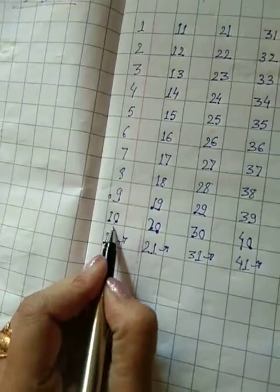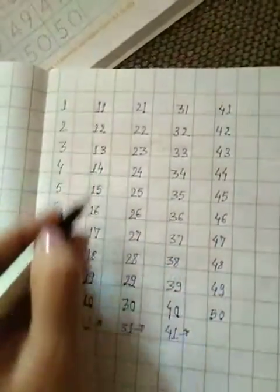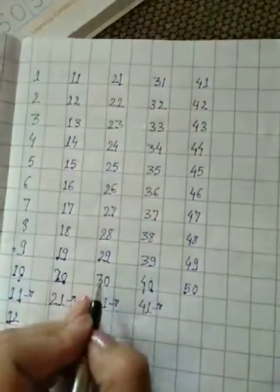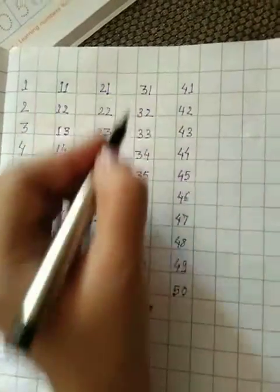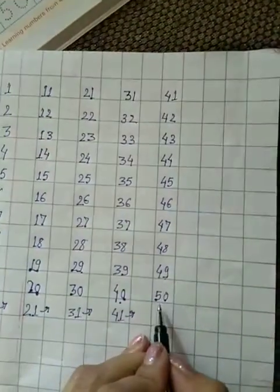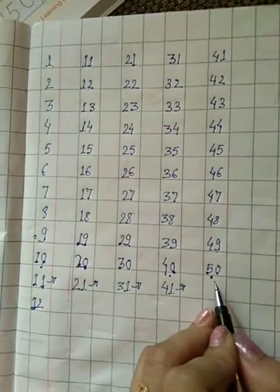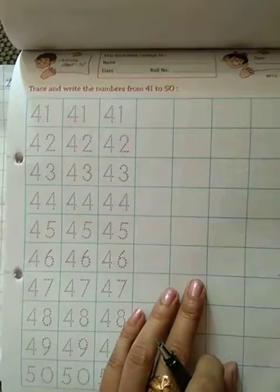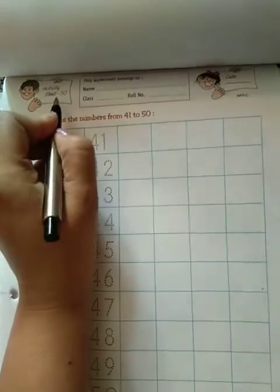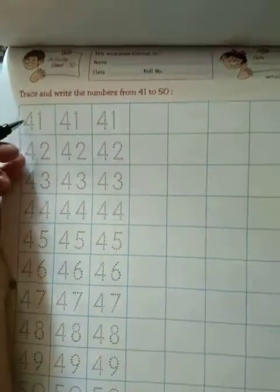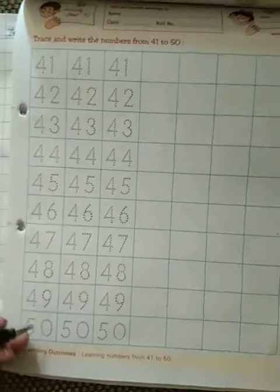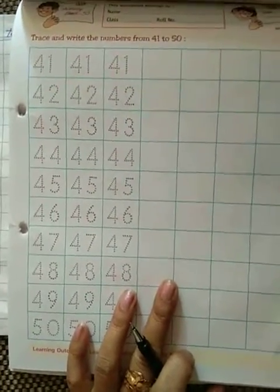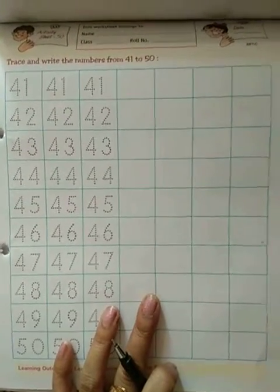1 se lekar 10 tak, 11 se lekar 20 tak, 21 se lekar 30 tak, 31 se lekar 40 tak and 41 se lekar 50 tak. Humne 1 to 50 ki counting aaj learn ki hai. After learning 1 to 50, you need to complete this sheet also, sheet number 50, where 41 to 50. Complete it and learn it. Bye-bye!